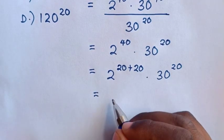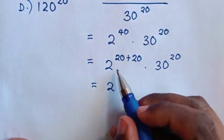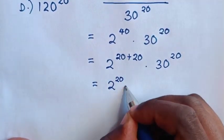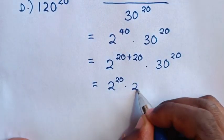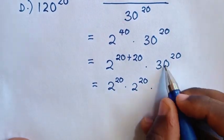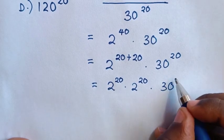Then, this will be equal to, for here we have common power of 20, times 2 power of 20, then times 30 power of 20.